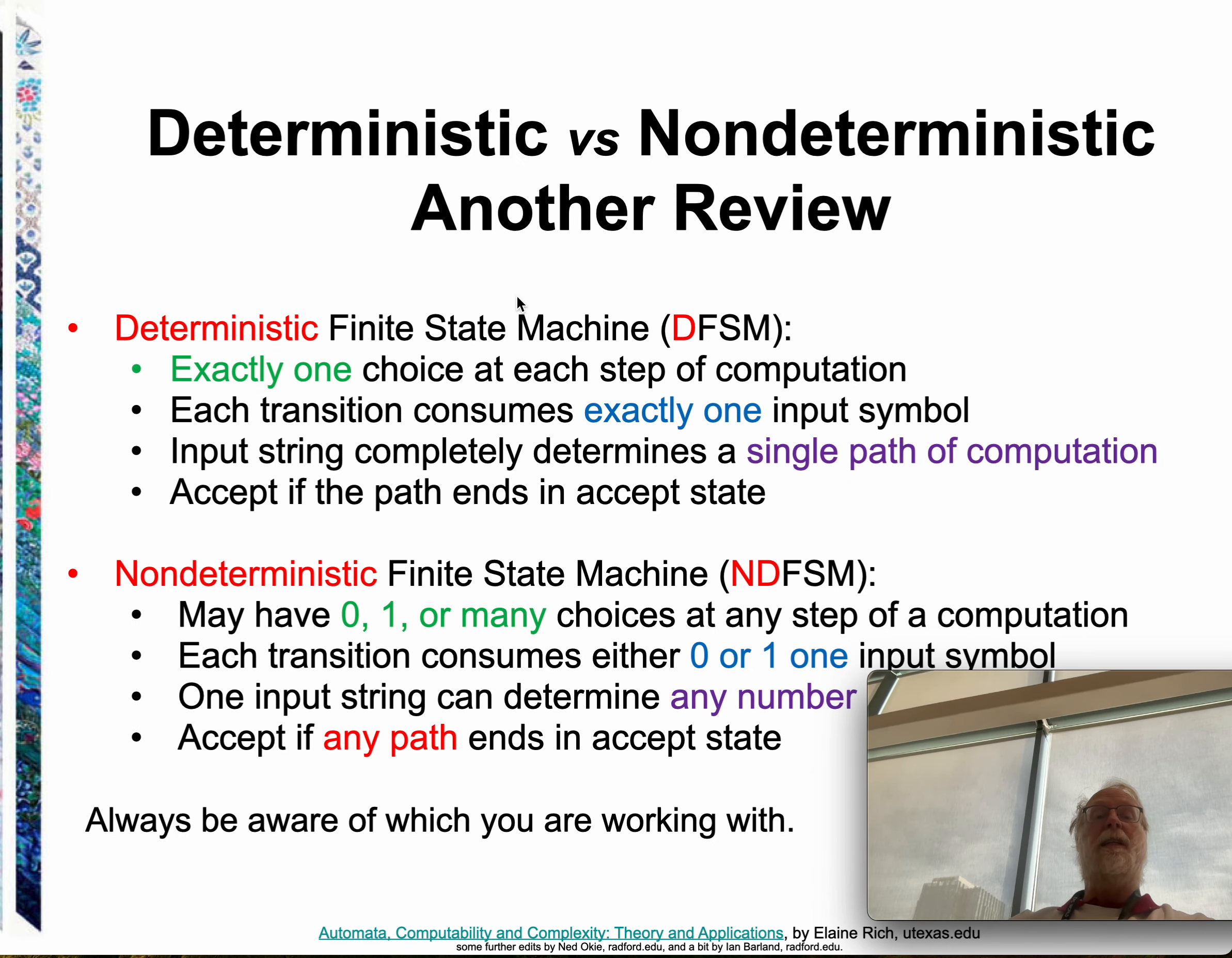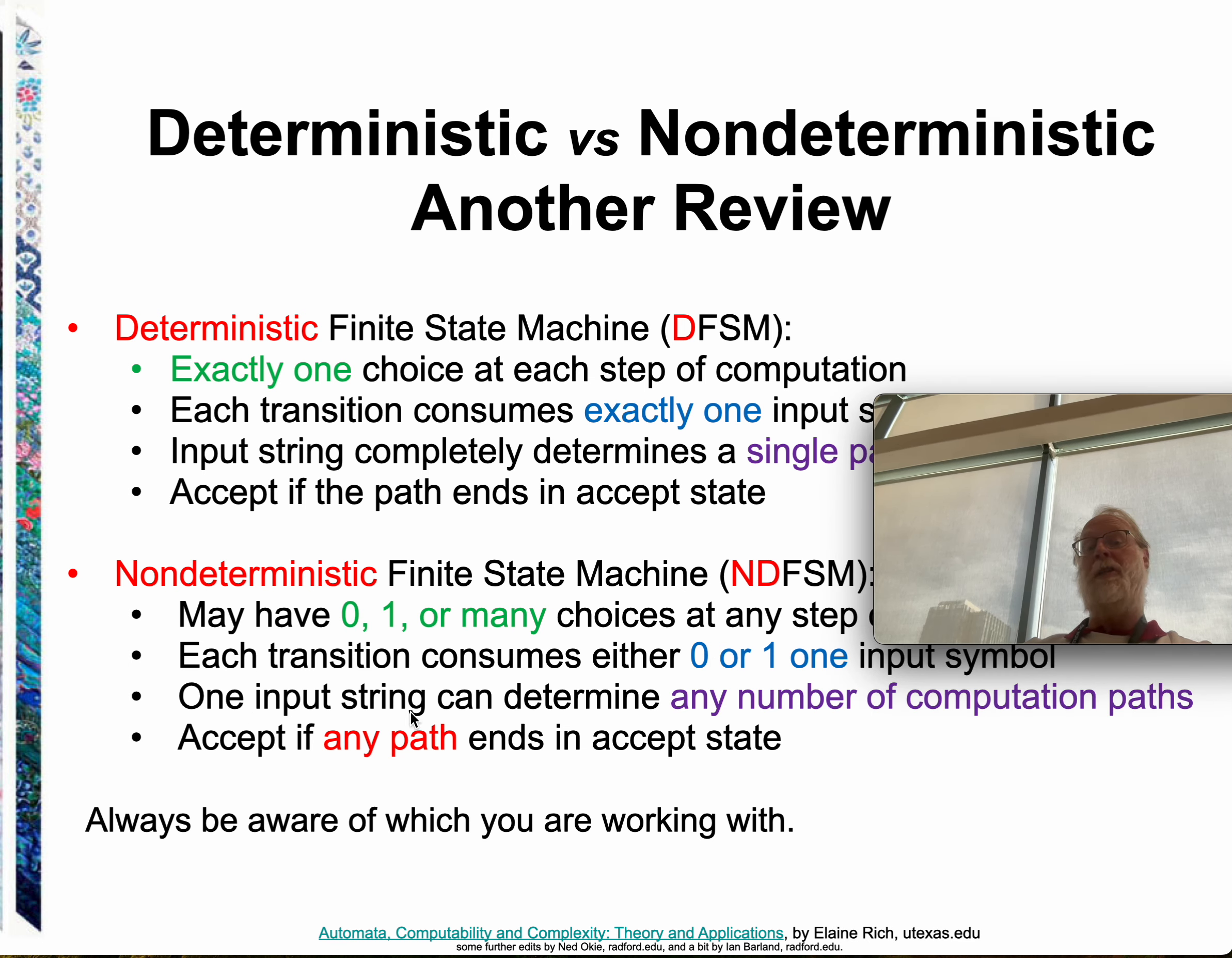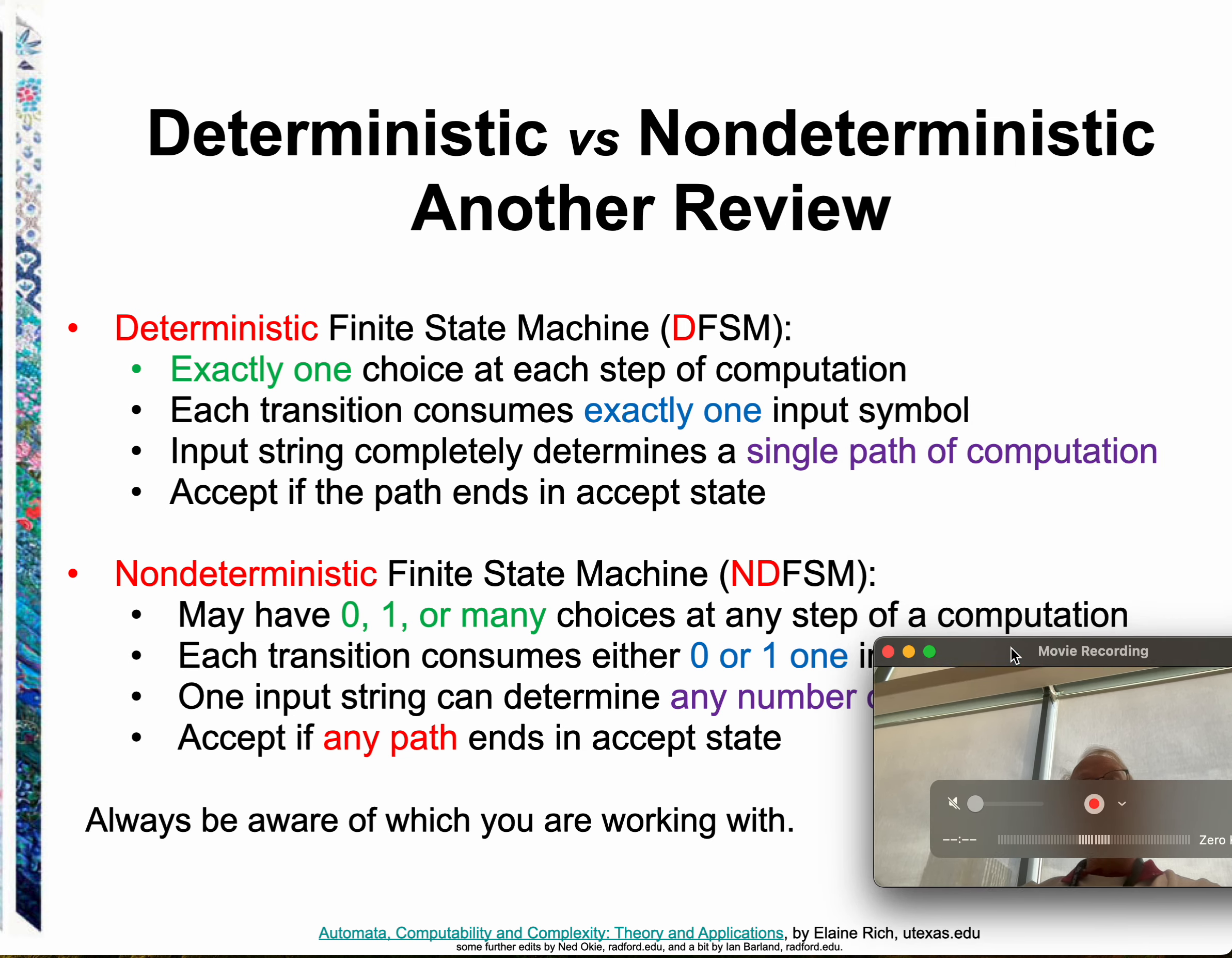And to put it a little bit differently, deterministic, you have exactly one choice. Every transition consumes exactly one input symbol. And an input string completely determines how the machine runs. Non-deterministic machine, you have many choices at each step. Transition might be an epsilon transition that consumes zero input symbols. And one input string can determine many, many computation paths, perhaps. And we accept if any of them are done. So those are, you know, if I asked you to do one or another on a homework or an exam, be sure you do, make sure you're clear, are you doing a deterministic or a non-deterministic machine.